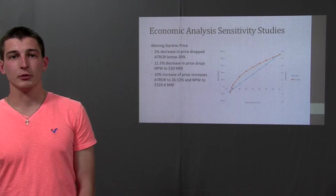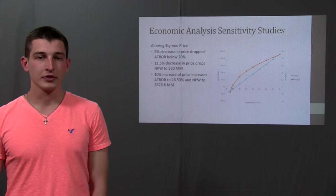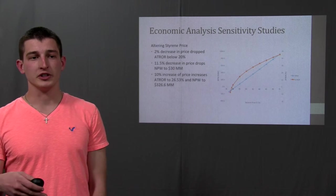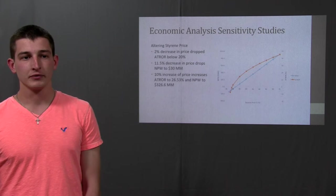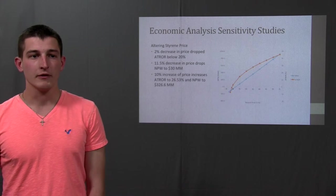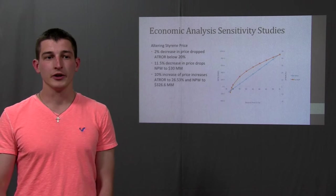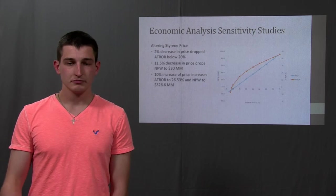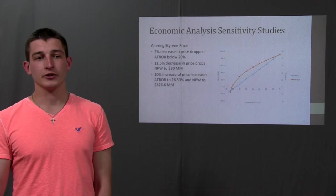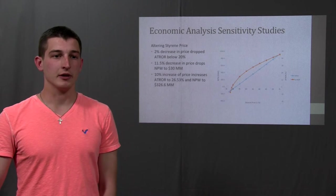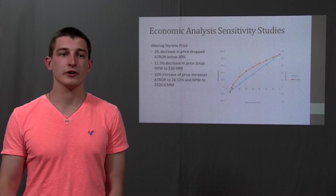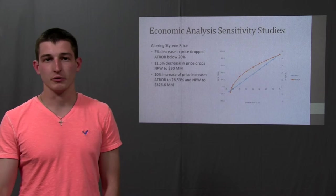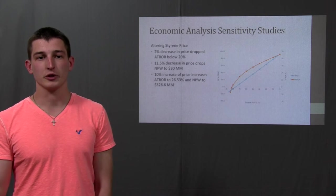For the economic analysis we did multiple sensitivity studies. The first was we altered the price of styrene. When we showed that the price of styrene decreased, with a 2% decrease, the ATRO would drop below 20%. If the price decreased by 11.5%, then we would drop below the net present worth of 30 million, which was again required for the process. On the other hand, if the styrene price increased by 10%, we'd reach an ATRO of 26.53 and a net present worth of 326.6 million, which would be much higher than what was originally necessary to go on with the process.